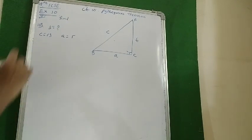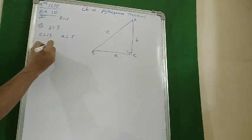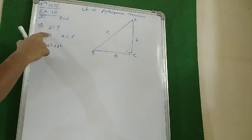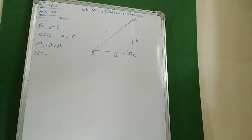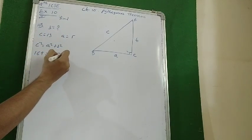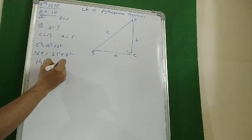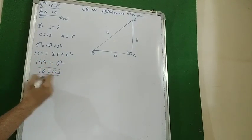The next one — again we will use Pythagoras theorem. We need to find B; C is 13 and A is 5. C square equals A square plus B square. 13 square is 169, 5 square is 25. We have B square equals 169 minus 25, which is 144. The value of B is 12.